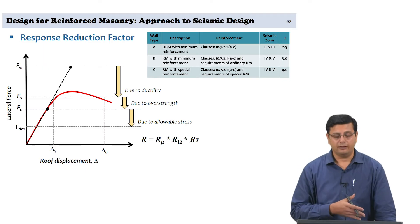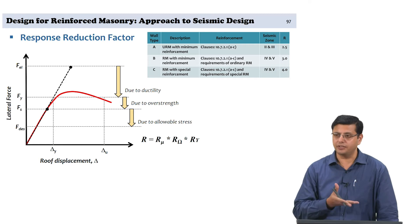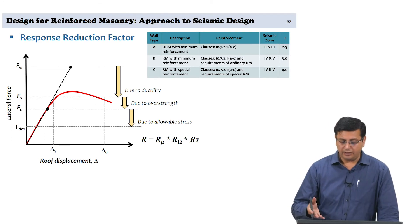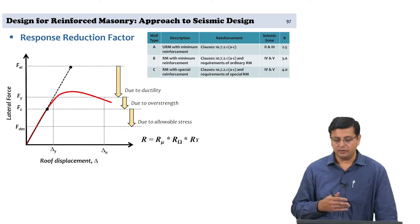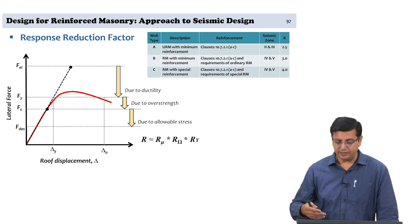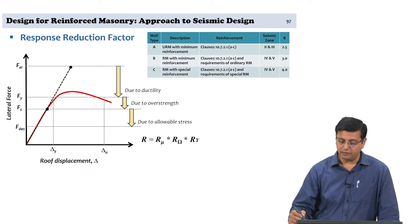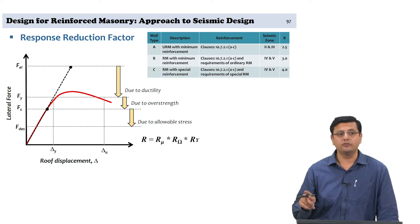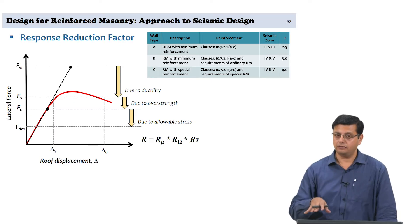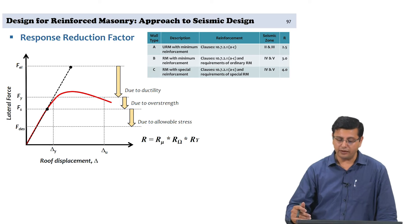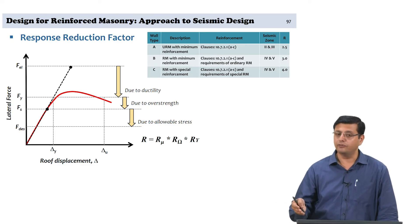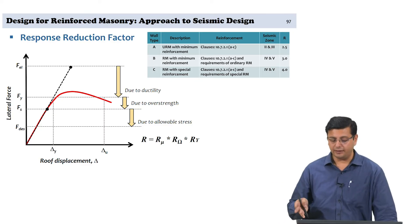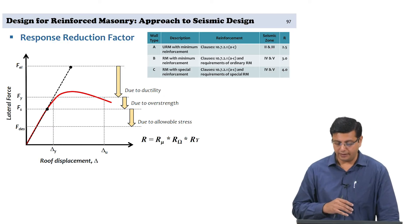I am revisiting the response reduction factor and what it is basically standing for. We have talked about the different values of the response reduction factor prescribed for reinforced masonry — Type A, Type B, and Type C walls. The first one is governed by IS 1905 design, which covers unreinforced masonry. All three are within allowable stress design, but Type A walls are only permitted in seismic zones 2 and 3 with minimum reinforcement provided.